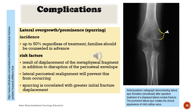Lateral overgrowth and spurring — Incidence: up to 50% regardless of treatment; families should be counseled in advance. Risk factors: result of displacement of the metaphyseal fragment in addition to disruption of the periosteal envelope; lateral periosteal realignment will prevent this from occurring. Spurring is correlated with greater initial fracture displacement. Anteroposterior radiograph demonstrating lateral spur formation (arrowhead) after operative treatment of a displaced lateral condyle fracture — the prominent lateral spur creates the clinical appearance of mild cubitus varus.